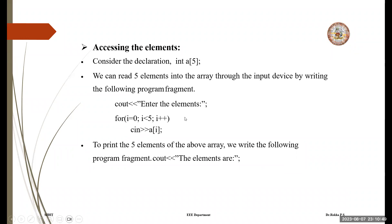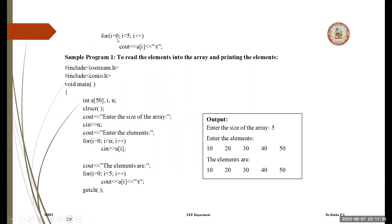How do you access the elements of an array? Consider the declaration 'int TR[5]'. We can read five elements into the array through an input device using a for loop: for i = 0, i less than 5 — reading into the array. To print the five elements, use a cout statement inside a for loop to output the array elements.